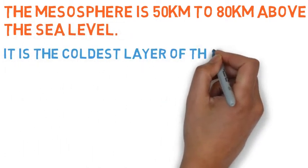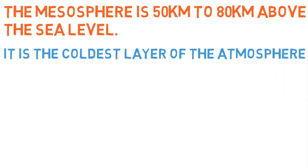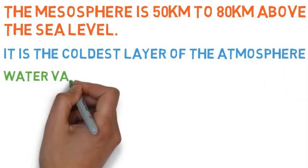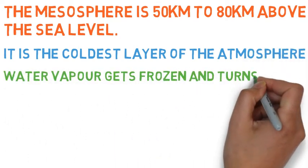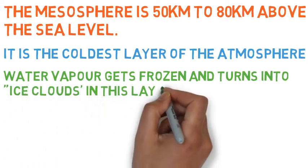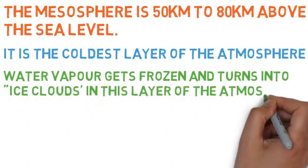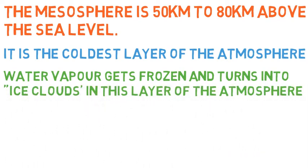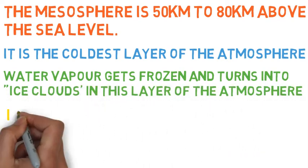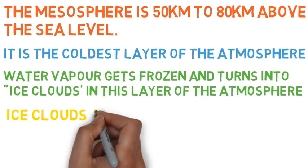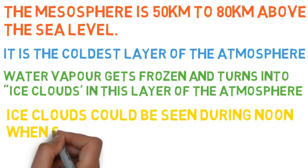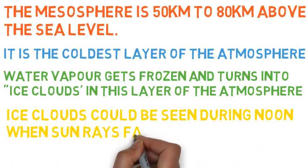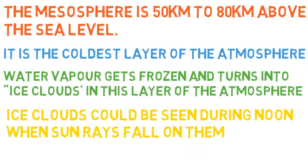It is the coldest layer of the atmosphere. Water vapor gets frozen and turns into ice clouds in this layer. These ice clouds can be seen during noon when sunrays fall on them.